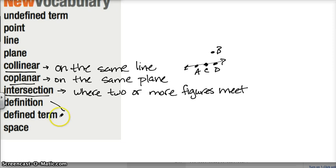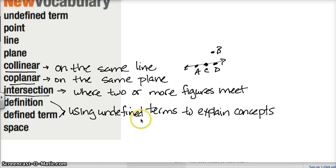The next two terms that we're going to talk about would be the word definition, which we know what that is, and a defined term. For our intents and purposes, we're going to talk about definitions and defined terms are going to be described by undefined terms. So in geometry, we're going to use definitions or we're going to define things using undefined terms to explain concepts.